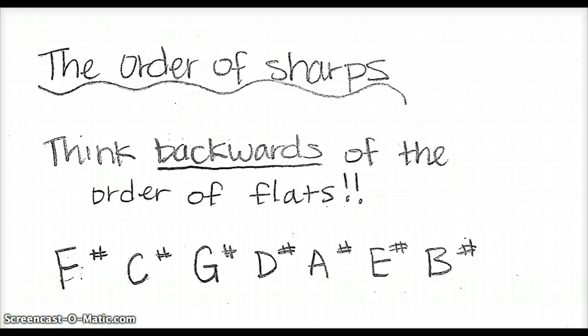The order of sharps is just backwards of the order of flats. So you just have to think backwards of the order of flats. So remember, we started with bead, and then greatest common factor. Well, now we're going to go the other direction. So basically, it's like factor, common, greatest.